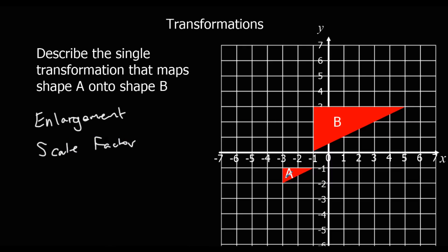And it was 1 up and 2 across. Now it's 3 and 6. So it's been times by 3. So it's a scale factor of 3. And we need to also know the centre of enlargement.